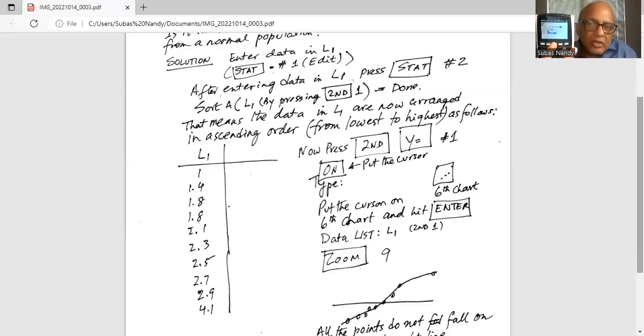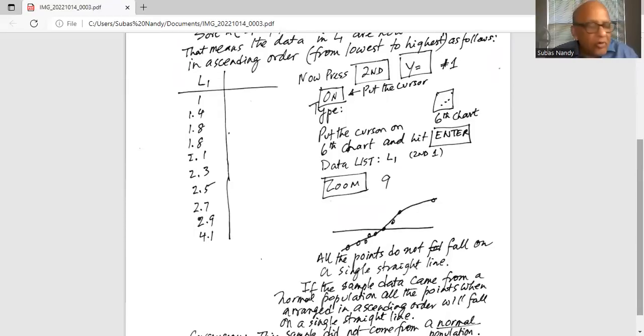And you will see a plot like this. Notice all the points in this quantile plot do not follow a single straight line. It kind of goes up and then again changes the slope and kind of flattens out at the end. So bottom line, these points do not fall on a single straight line. All the points do not fall on a single straight line.